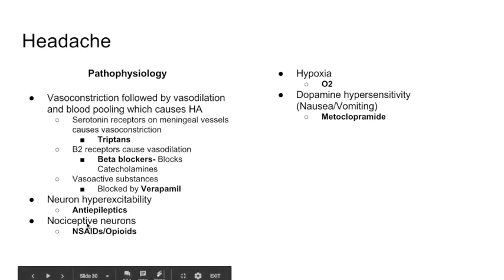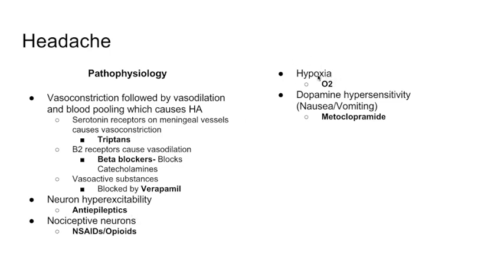There are nociceptive receptors on the neurons — nociceptive just means pain — so you can use NSAIDs or opioids to relieve the headache caused by these receptors. Hypoxia can also cause headache, and we've used oxygen to relieve hypoxia. There is also dopamine hypersensitivity, which causes the nausea and vomiting associated with the headache. You can use a medication that specifically targets the dopamine receptors to relieve the nausea and vomiting, which is metoclopramide.